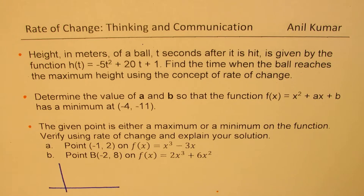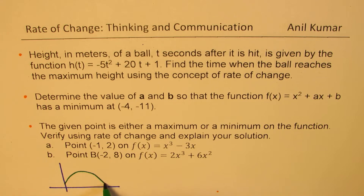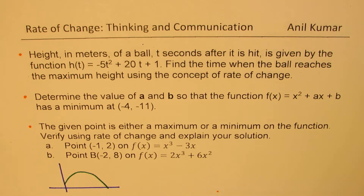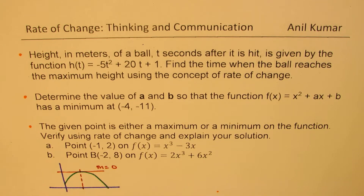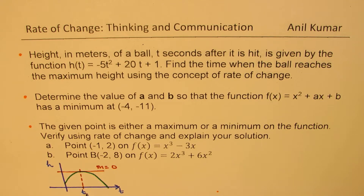In the first question, we have a ball which follows a parabolic trajectory, and we need to figure out the point where the highest point is reached. At that point the rate of change will be zero — slope m equals zero. So we need to find that value of t for maximum height.